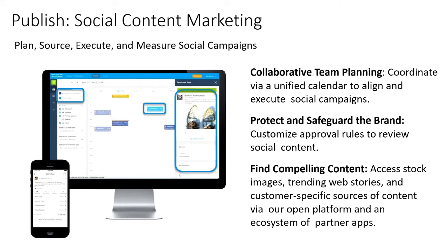Currently working with a company called Indigent Private Limited, Bangalore. Today I will talk about the Publish tab in Social Studio. Publish will help you to create and publish content across multiple social channels in real time. You can use Publish for collaborative team planning on a unified calendar, protect your company's brand by creating approval rules for social content, and find relevant and compelling content via open platforms or partner apps.